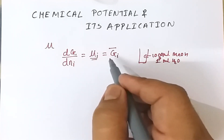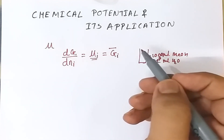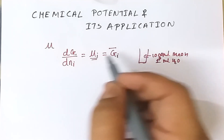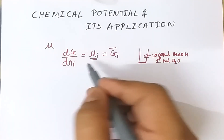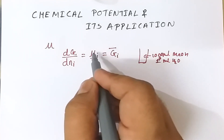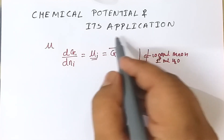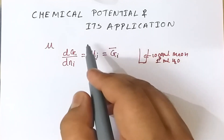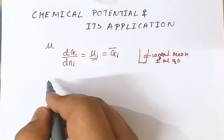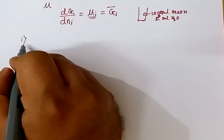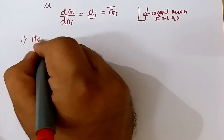Chemical potential is used to prove several laws like Henry's law, Raoult's law, the Gibbs adsorption isotherm, and phase rule, as well as various terms relating to fugacity and activity. We are going to see two applications: we will prove Henry's law and Raoult's law using chemical potential.